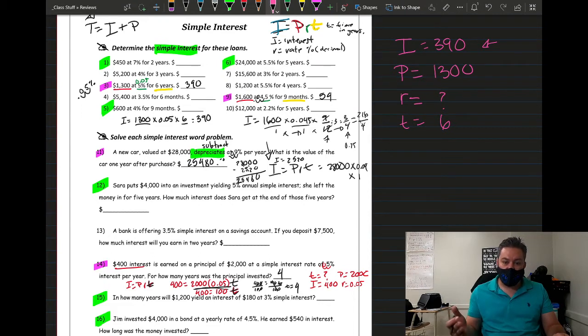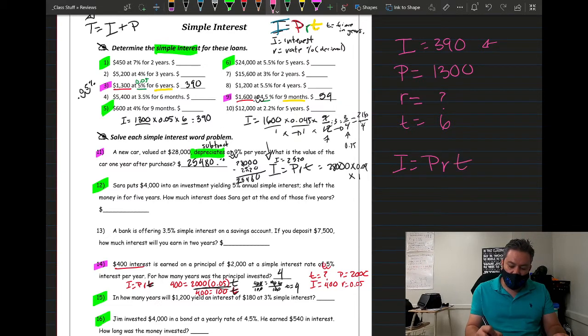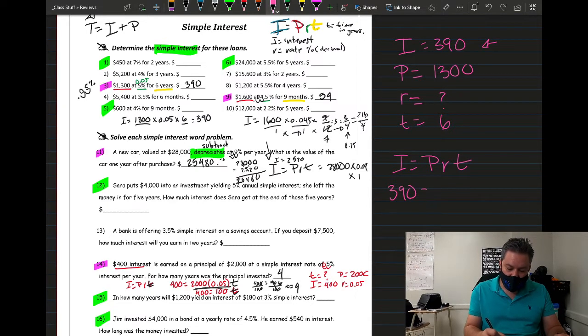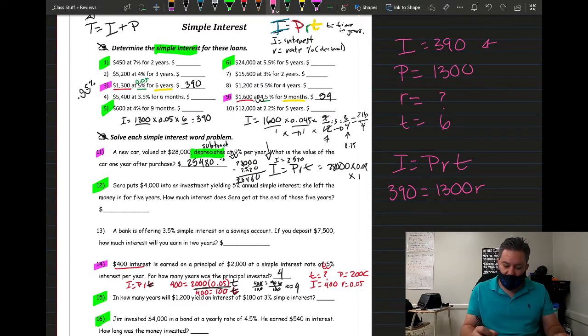I need to use the formula and work it backwards. So again, the formula is I equals P R T. Remember we have to convert the percent rate as a decimal and that's going to be the only difference whenever you're finding the rate. So right now what I'm going to do is substitute the values in for everything that I currently have. So my interest is going to be 390 equals my principal is 1,300, my rate I don't know that, and my time is six years.